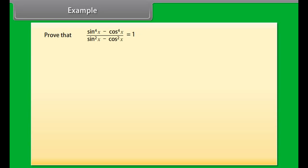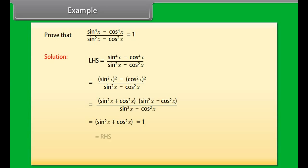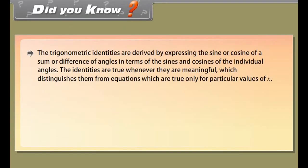Example 1: Let's now solve an example related to trigonometric identities. Prove that tan x · sin x + cos x is equal to sec x. To prove this we will use the fact that sin square x plus cos square x is equal to 1 for all values of x. On solving the left hand side, which is tan x · sin x + cos x, we get sec x, which is equal to the right hand side. Hence tan x · sin x + cos x is equal to sec x.